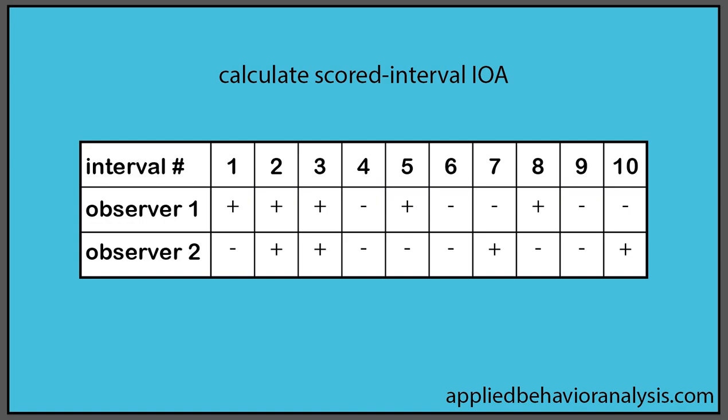This is how we calculate scored interval IOA. For each interval, look to see whether Observer 1 or Observer 2 indicated that a response was marked.